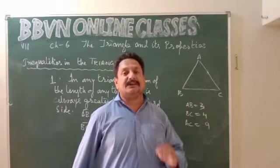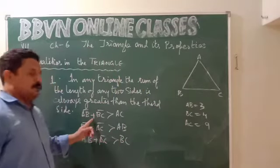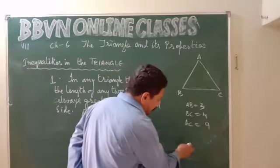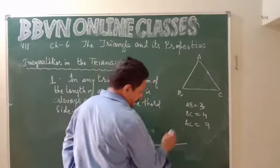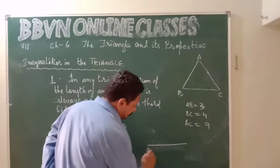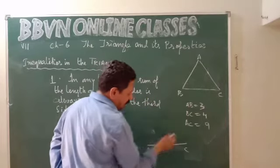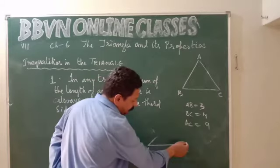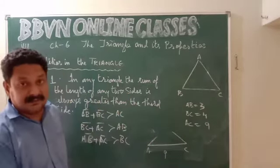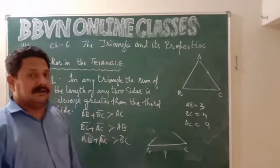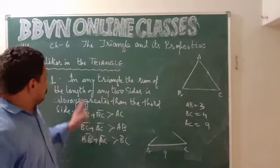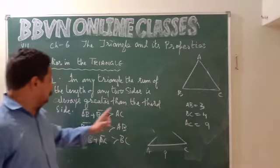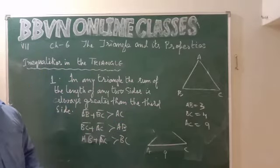The sum of any two sides must always be greater than the third side. Suppose you draw a base AC of 9 cm — from A you go 3 cm, and from C you try to reach with 4 cm, but those two sides will never meet each other. So a triangle cannot be formed. This is the first inequality in any triangle.